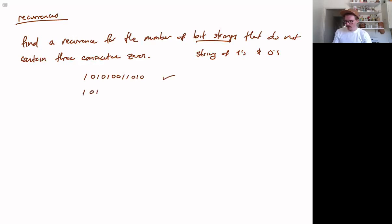But something like 1, 0, 1, 0, 0, 1, 0, 0, 0, 1, 0. This has three consecutive zeros. This is not OK. This is what we're disallowing.